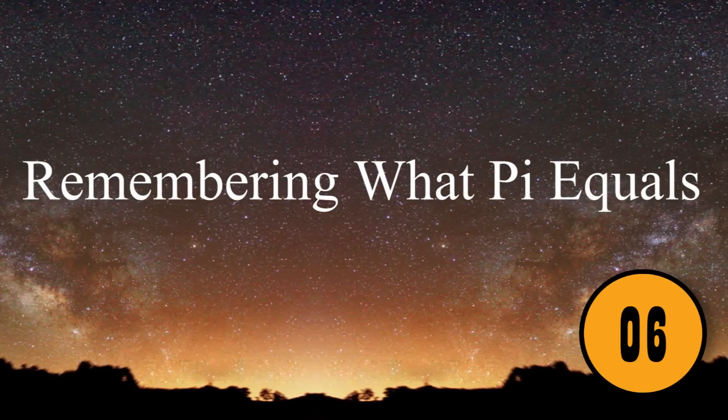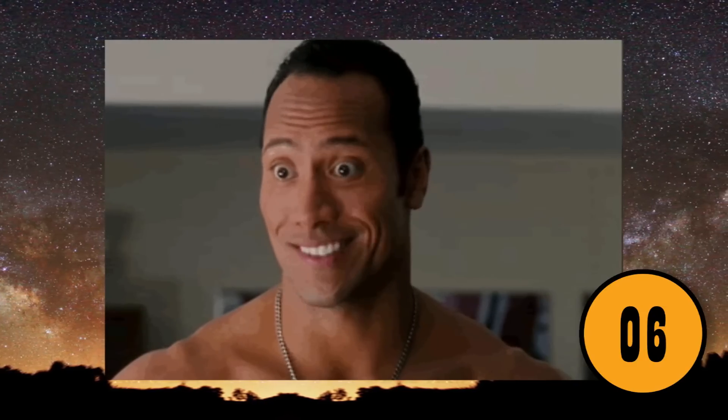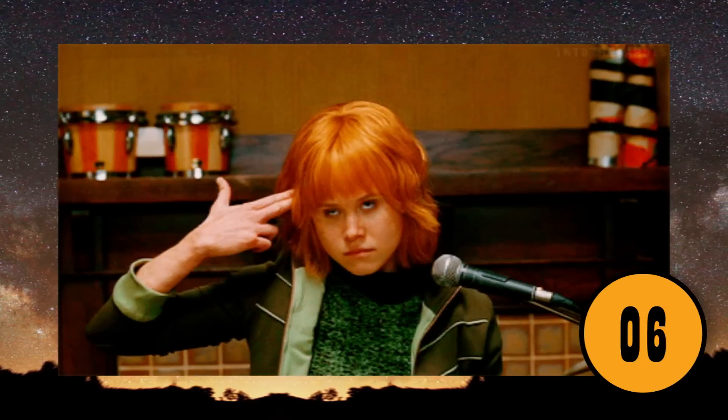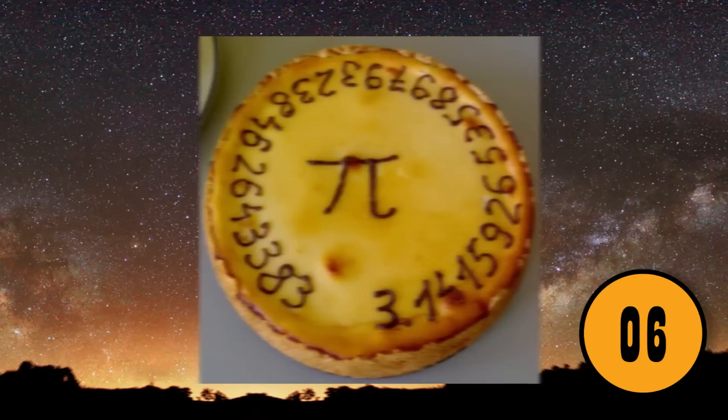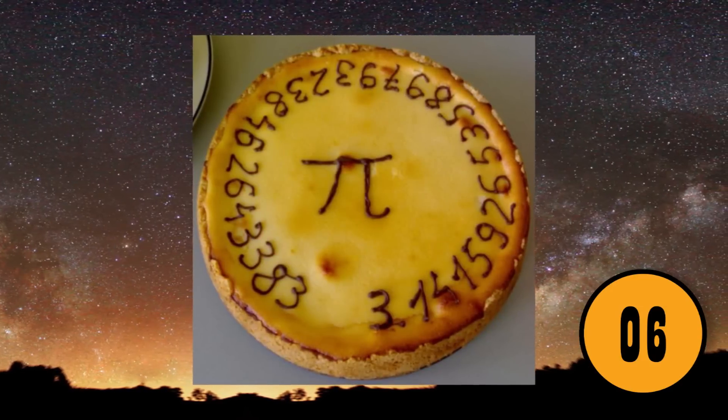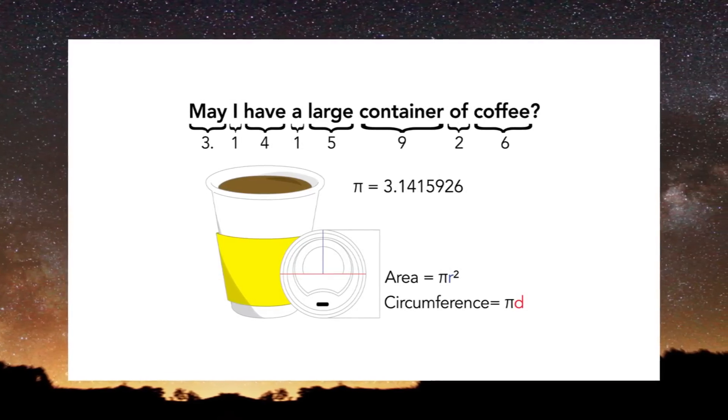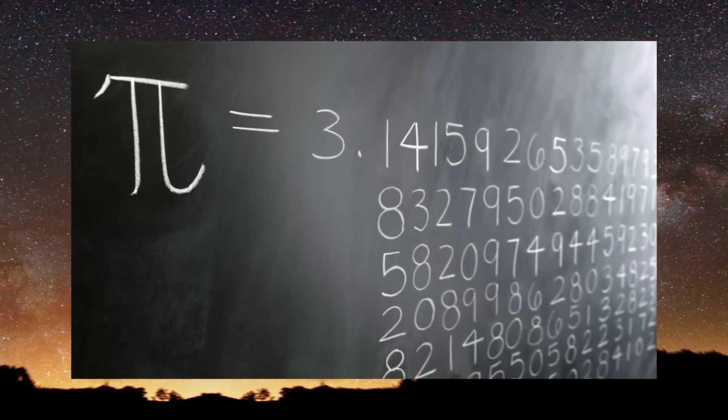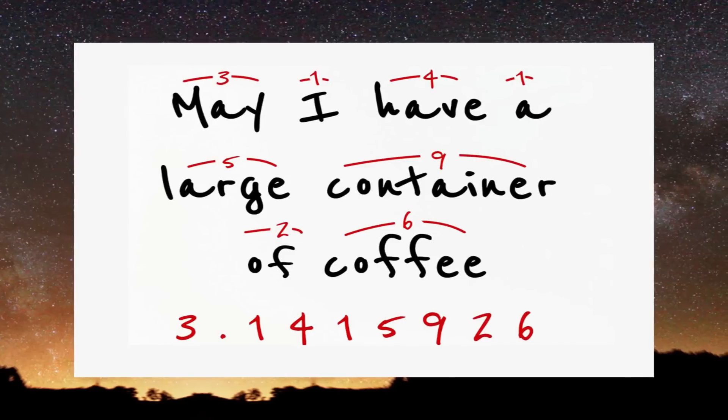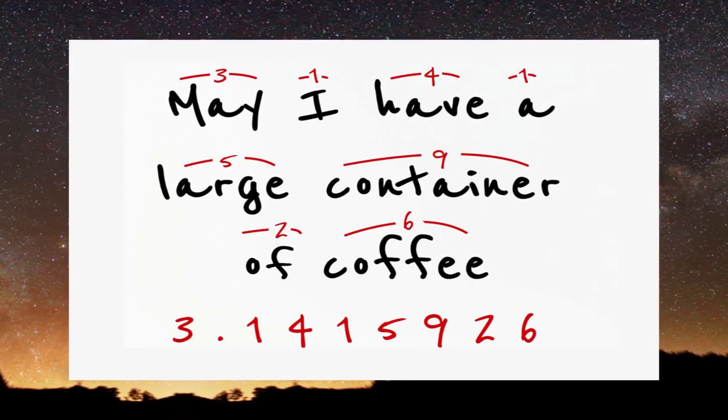6. Remembering What Pi Equals. Most people struggle to remember that Pi equals 3.1415926. If you can't remember what Pi equals, you just need to remember one simple phrase. May I have a large container of coffee? The number of letters in each word corresponds to the numbers in Pi. May has three letters, therefore the first letter of Pi is three. The word I has one number. Have has four numbers, and so on.